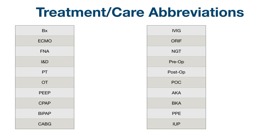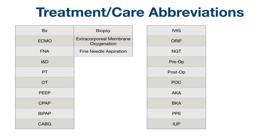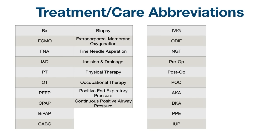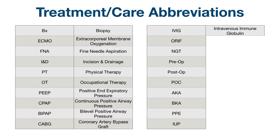Let's wrap this up with abbreviations you might see associated with treatment or care. Hit pause in the video and try to name as many as you can. BX: biopsy. ECMO: extracorporeal membrane oxygenation. FNA: fine needle aspiration. I&D: incision and drainage. PT: physical therapy. OT: occupational therapy. PEEP: positive end expiratory pressure. CPAP: continuous positive airway pressure. BIPAP: bilevel positive airway pressure. CABG: coronary artery bypass graft. IVIG: intravenous immune globulin.